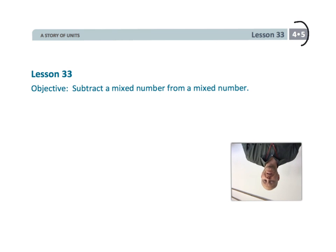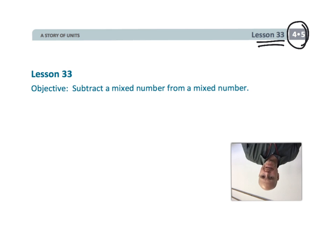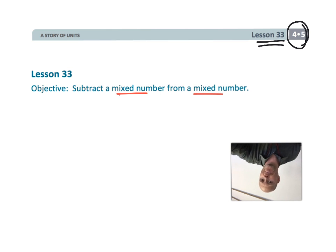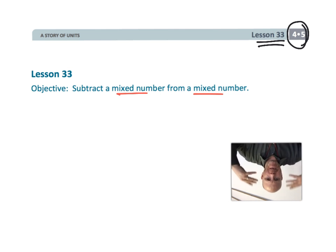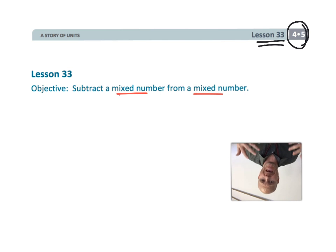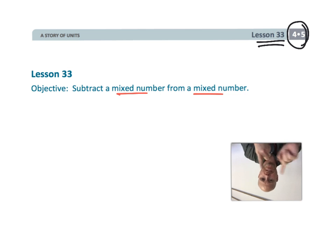This is fourth grade, module five, lesson 33, and in this lesson students are going to be subtracting a mixed number from a mixed number. Now, we're not exactly teaching the standard algorithm at this point, because quite honestly, when we do, students just memorize the rule and they kind of lose the meaning of the mathematics. So instead, we're going to be teaching with three really cool techniques.